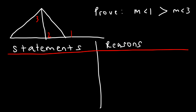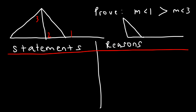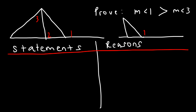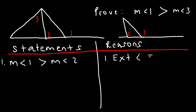We don't have any given statements, but let's focus on angles 1 and 2. If we just focus on this triangle, notice that angle 1 is the exterior angle and angle 2 is the interior angle. Therefore, we can say that the measure of angle 1 is greater than the measure of angle 2. The reason for this is the exterior angle inequality theorem.